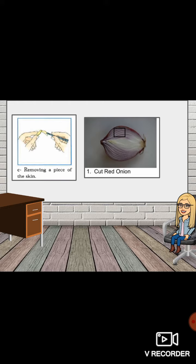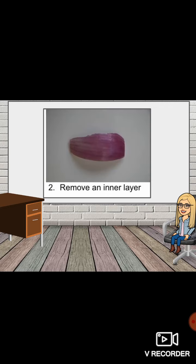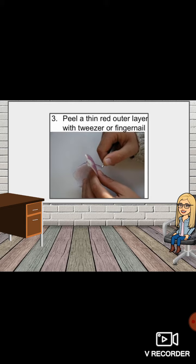Removing a piece of the skin. Cut the red onion. Remove an inner layer. Peel a thin red outer layer with tweezer or fingernail.